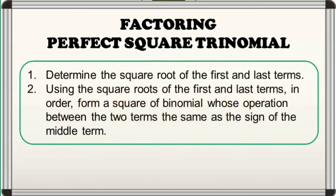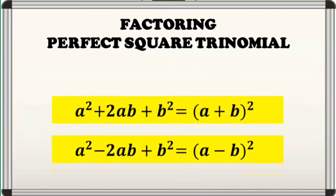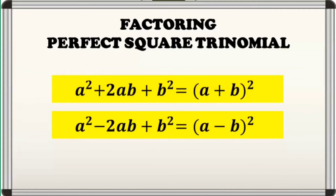Alright, the steps that we have followed in our examples can be shortened by familiarizing this general formula. If we have a PST of the form a squared plus 2ab plus b squared, its factored form is the square of binomial quantity a plus b squared. Also, a PST of the form a squared minus 2ab plus b squared, its factored form is the square of binomial quantity a minus b squared. Wherein a and b are the square roots of the first and last terms, and the operation in between the two terms is dependent on the sign of our middle term.